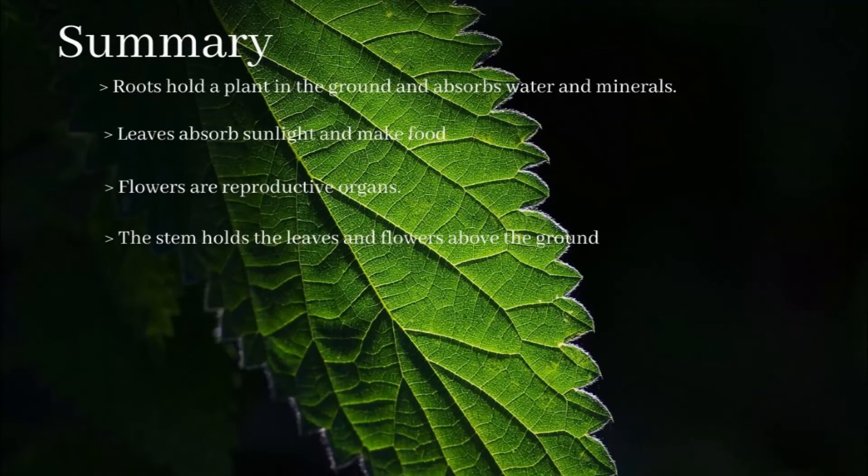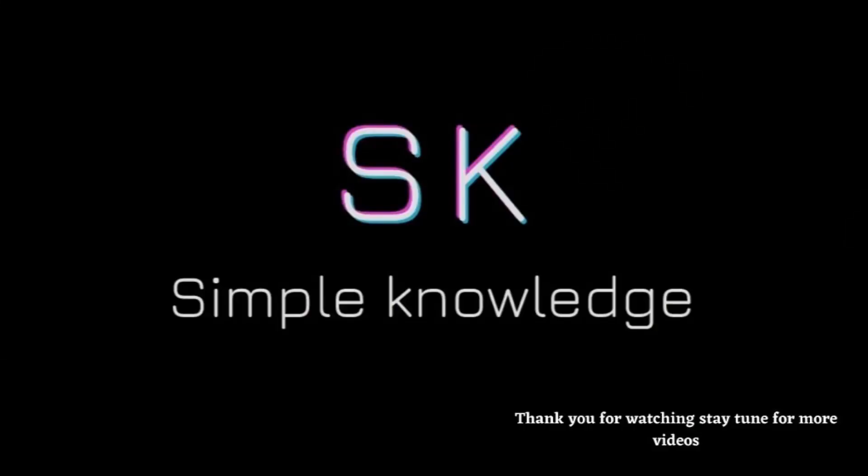Summary: roots hold the plant in the ground and absorb water and minerals. Leaves absorb sunlight and make food. Flowers are reproductive organs. The stems hold the leaves and flowers above the ground. Thank you for watching Simple Knowledge — stay tuned for more videos.